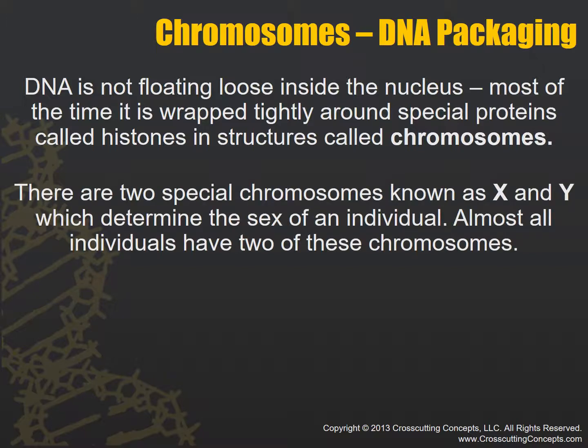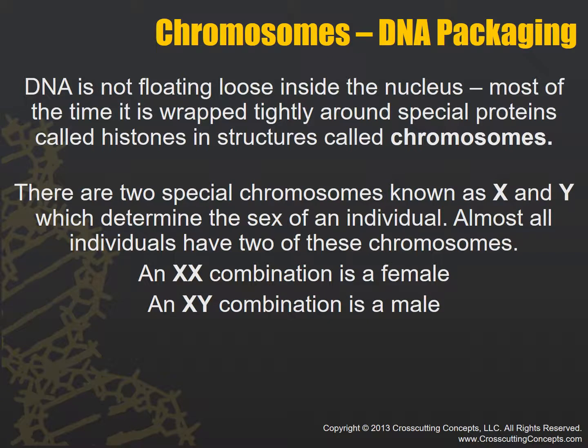There are two special chromosomes in all animals known as the X and Y. The X and Y determine the sex of an individual. Almost all individuals have two of these chromosomes. An XX combination is a female, an XY combination is a male, and a YY combination is impossible — it would result in a miscarriage in a human because it cannot form. You must have at least one X.